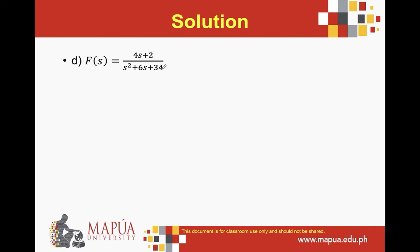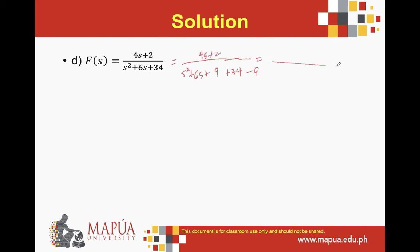For the next example, the denominator is not factorable, so we complete the square. For s² + 6s, take half of 6 which is 3, and 3² = 9. Adding and subtracting 9 gives a perfect square: (s + 3)². With the constant term, 34 − 9 = 25, so the denominator becomes (s + 3)² + 25.